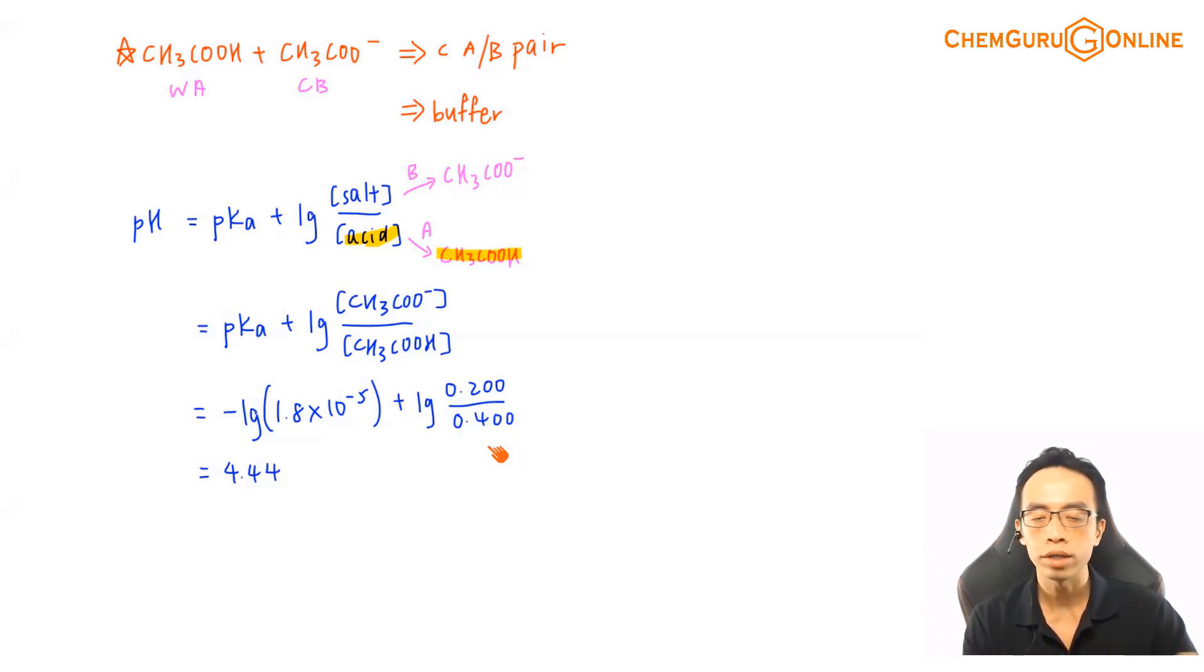We did reactions where a base added to acid, I can determine the resultant solution using the ice table. But what if I'm adding sodium hydroxide to a buffer? How do we handle that?